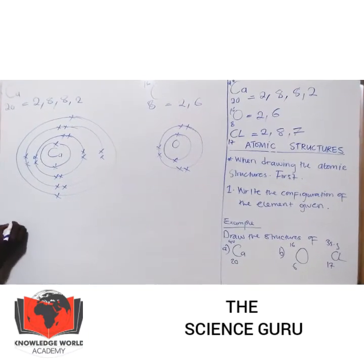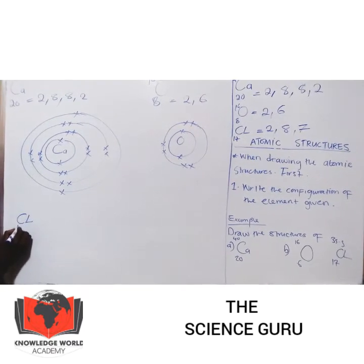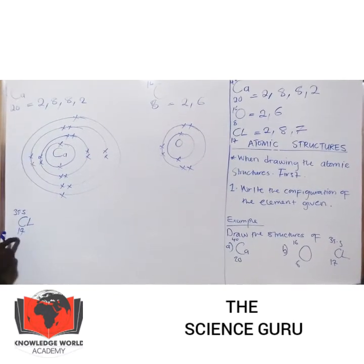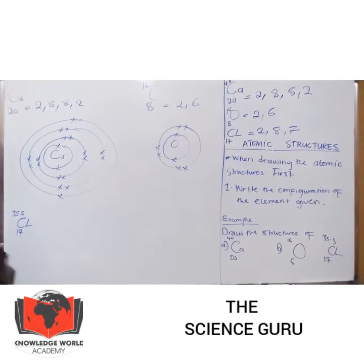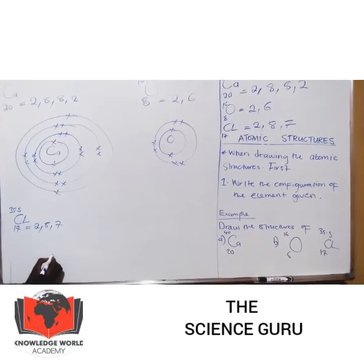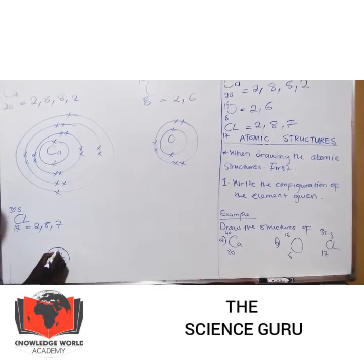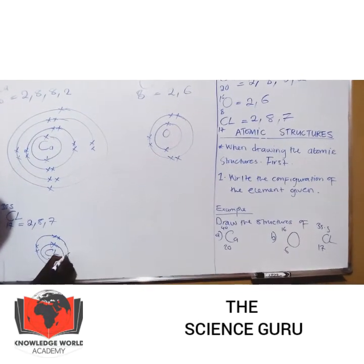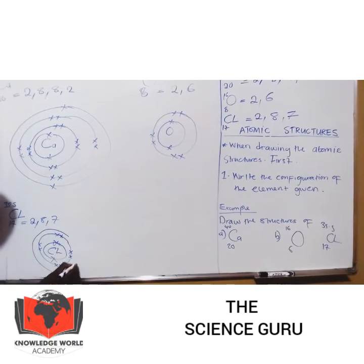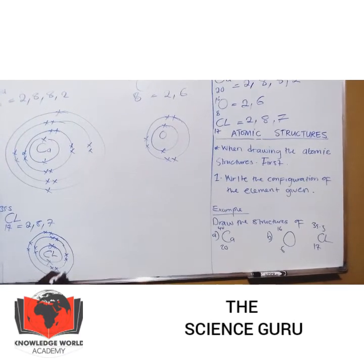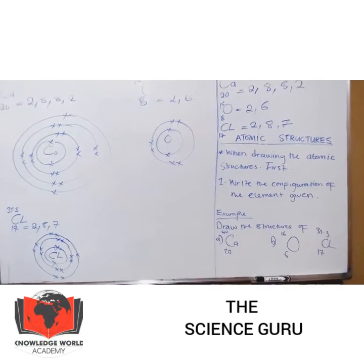Then we come to chlorine. You know it is 17. Don't use the mass number — you are using the proton number, or the number of electrons. Configuration: 2, 8, 7. So just draw the structure: bring the symbol, introduce the nucleus, put the 2 for the first shell, put the 8 for the second shell, and introduce the 7. Just like that. Let's look at the next slide.